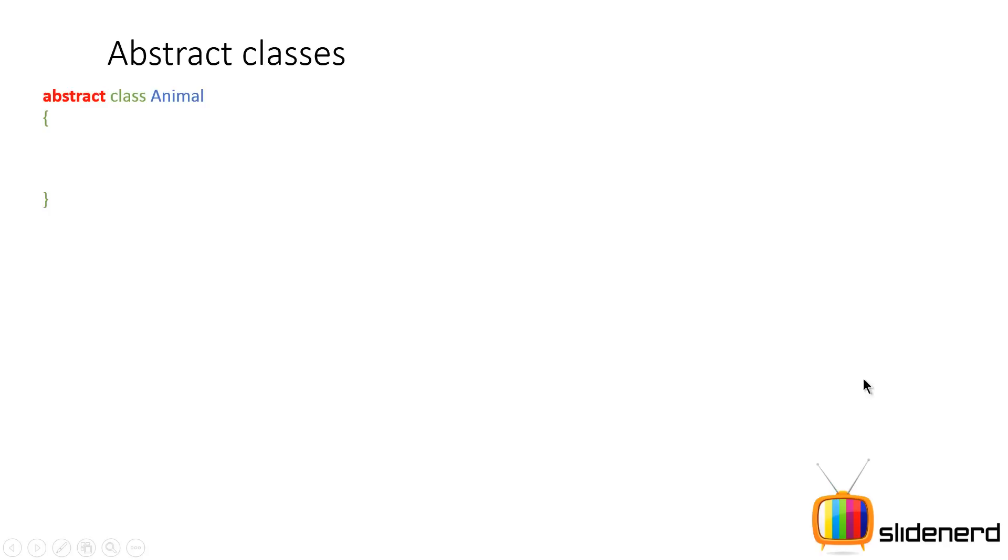So how can you make an incomplete class? Let's take a look at an example here. I have made a class animal and as you notice, I have a red word here which says abstract. So I have this variable, string noise. No problem with that. Every other normal class also has a variable, right?